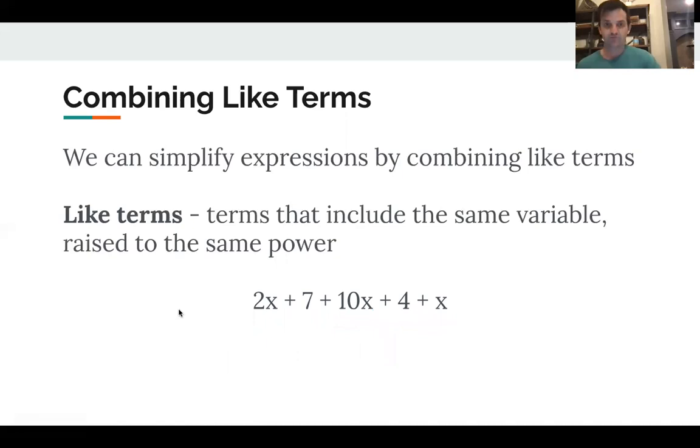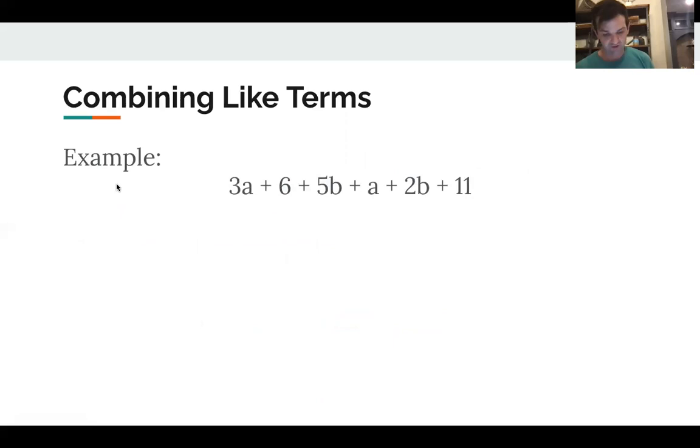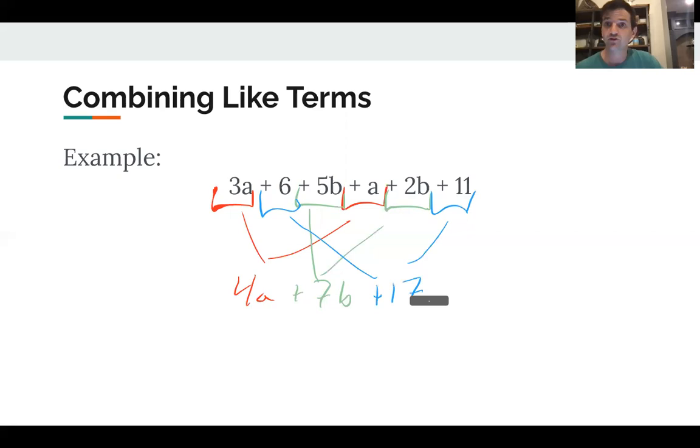Let's do a couple more quick examples here. All right. So here we have 3a plus a, that's going to be 4a. We have 5b and 2b. That's going to be 7b. And we have adding 6 and adding 11. That's going to be adding 17. You'll notice we usually put the variable terms first and the constants at the end of the problem. So the final answer here would be 4a plus 7b plus 17.